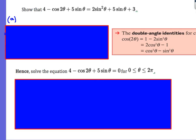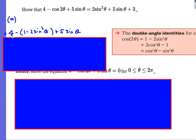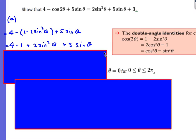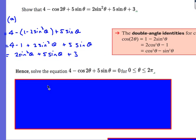The final question: 4 − cos2x + 5sinx = ... For this one I need to use a double angle formula. I want everything in terms of sine, so I choose cos2θ = 1 − 2sin²θ. Replacing cos2θ with 1 − 2sin²θ and expanding the bracket, simplifying gives 2sin²θ + 5sinθ + 3.